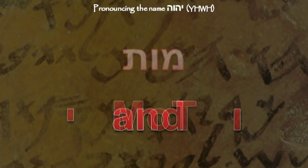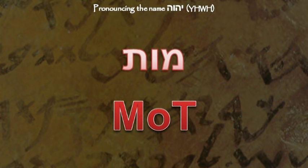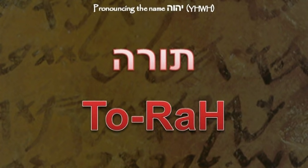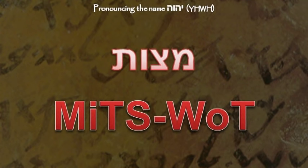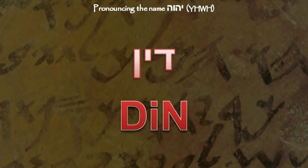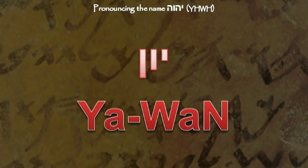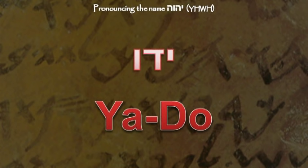Here are some examples. Mot is the word for death — the waw is in the middle of the syllable, so it is a vowel. Torah, meaning teachings or law, has the waw at the end of a syllable, so it is a vowel. Mitzvot, meaning commandment — the waw is at the beginning of a syllable, so it is a consonant. Din is the word for judge — the yod is in the middle of the syllable, so it is a vowel. Yawon, the Hebrew word for Greece — both the yod and waw are consonants because they are both at the beginning of a syllable. Yaddo, meaning 'his hand' — the yod is a consonant because it is at the beginning of a syllable, and the waw is a vowel because it is at the end of a syllable.